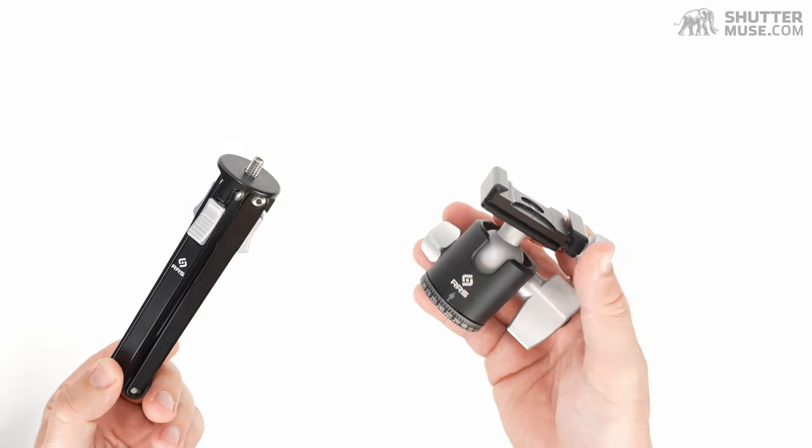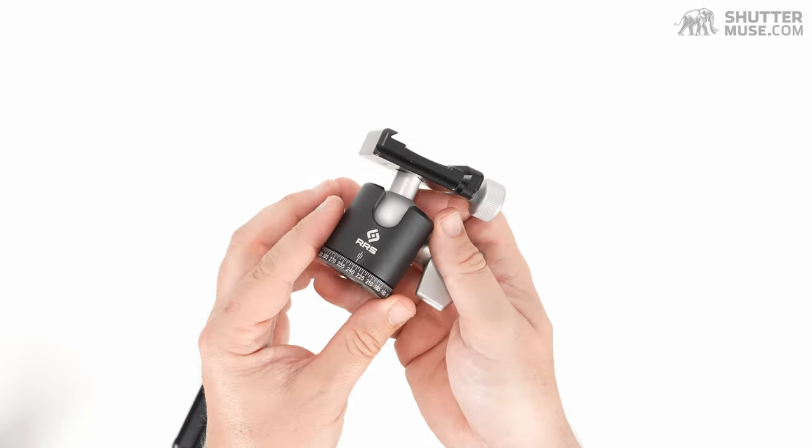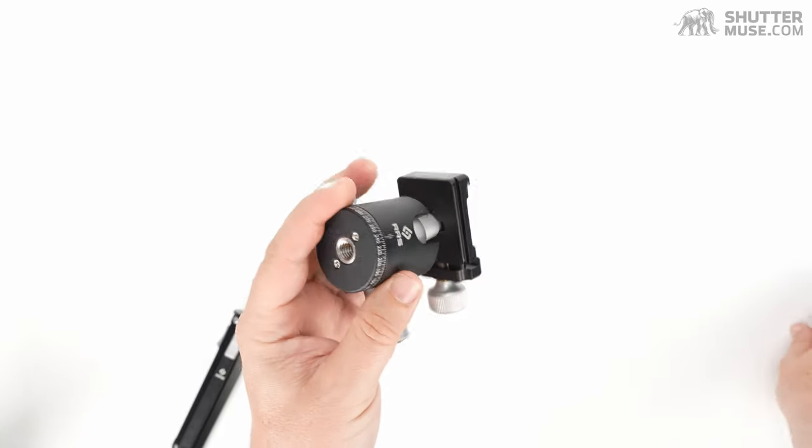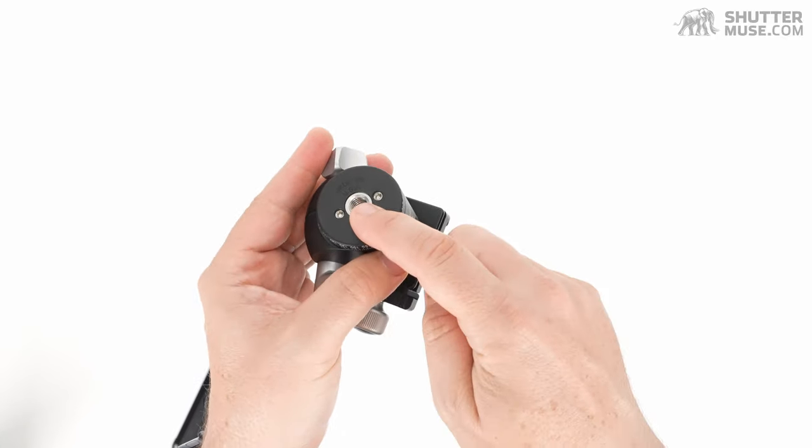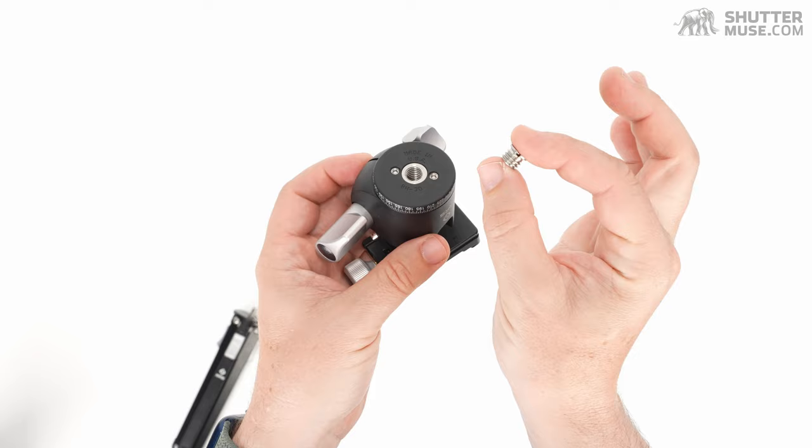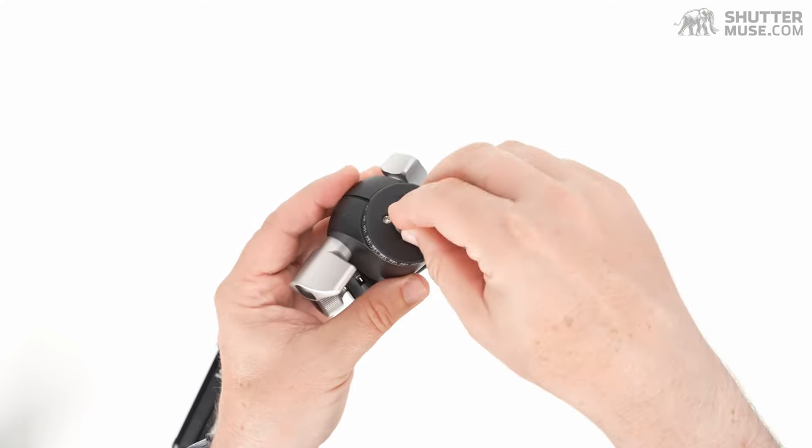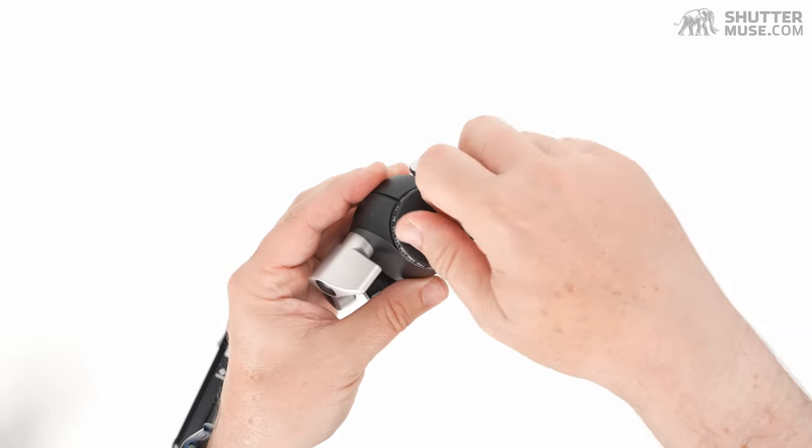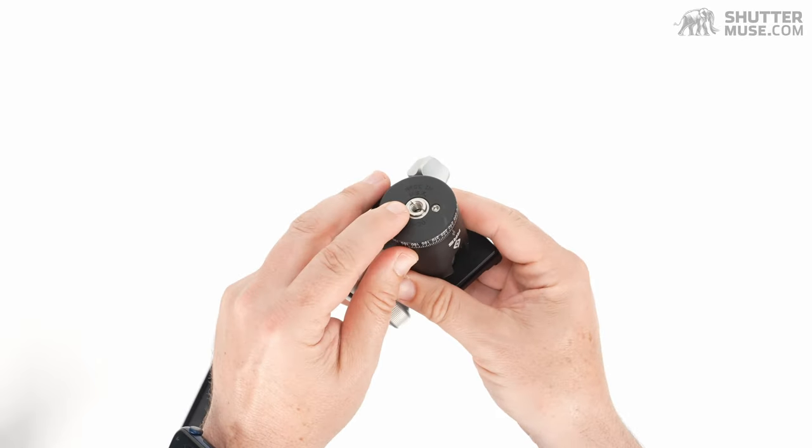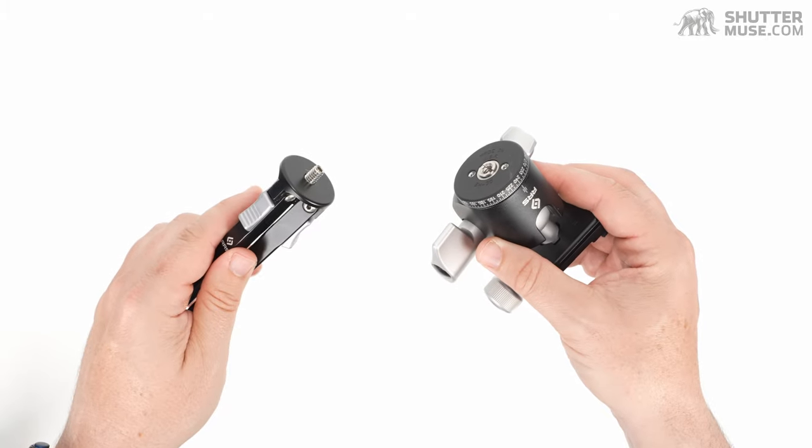What you could do is put a small ball head on it. Now this is the BH-30 from Really Right Stuff. It's perhaps a little bit overkill for this tripod but it's what I had to hand right now. Now a ball head is going to have a 3/8-16 thread on the bottom. So to get this onto the tabletop tripod you need to use a reducer bushing. These are available for about a dollar from any good photo store. And this basically screws into the thread like so. This reduces from 3/8-16 down to 1/4, and then you can just attach it to the top of this tabletop tripod.